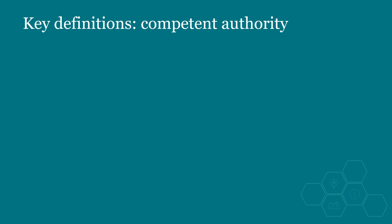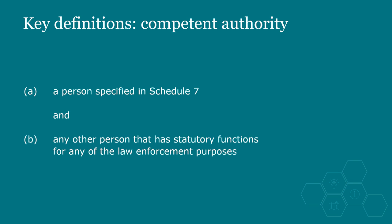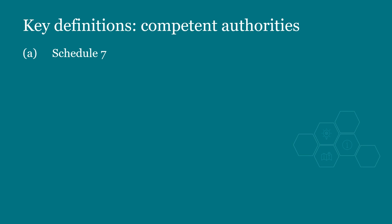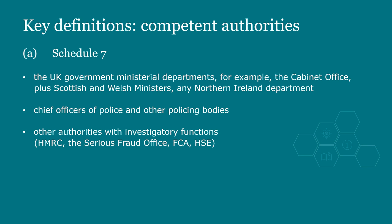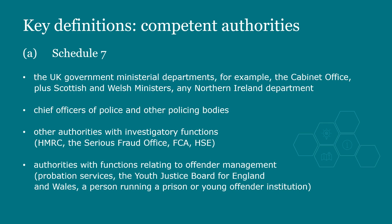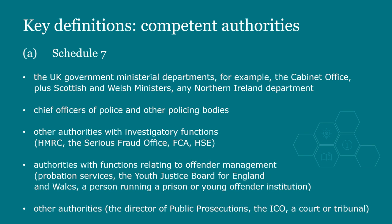Section 30 of the DPA defines a competent authority as a person specified in Schedule 7 and any other person that has statutory functions for any of the law enforcement purposes. Schedule 7 of the DPA gives a list which covers UK Government Ministerial Departments, Chief Officers of Police and other policing bodies, other authorities with investigatory functions, authorities with functions relating to offender management, and other authorities — for example, the Director of Public Prosecutions and the ICO. This list may be amended by a statutory instrument. The intelligence services are not listed as competent authorities, as they are governed by the provisions in Part 4 of the DPA.